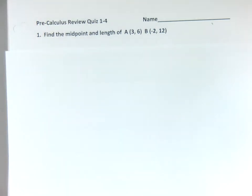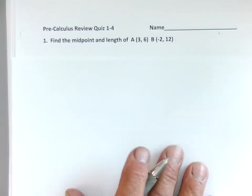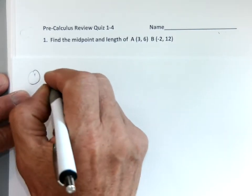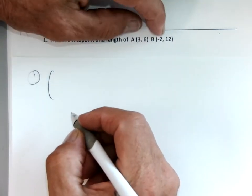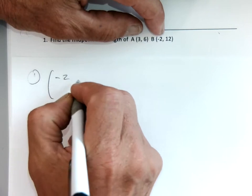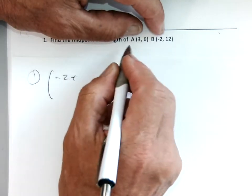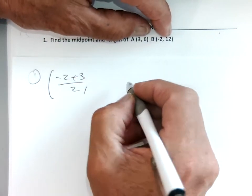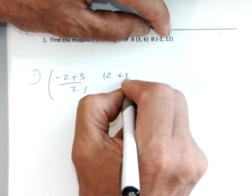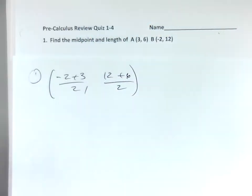We are live. Okay, so first of all, find the midpoint and the length. So my midpoint formula is going to be x2 plus x1 over 2, the y2 plus y1 over 2, that's my midpoint.